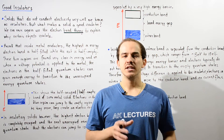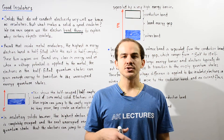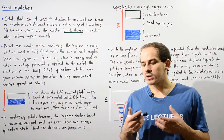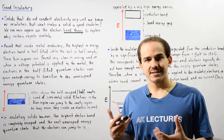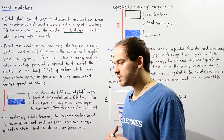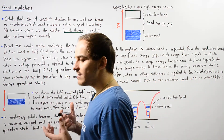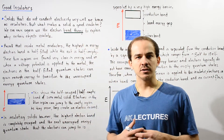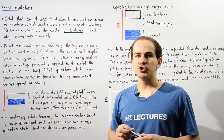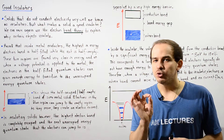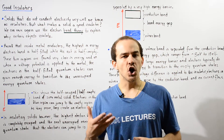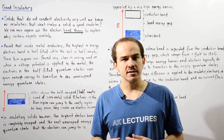Previously, we discussed good conductors of electricity — solid objects that are able to conduct electricity well, known as good conductors. Now we're going to discuss those objects that do not conduct electricity well, which are known as insulators.